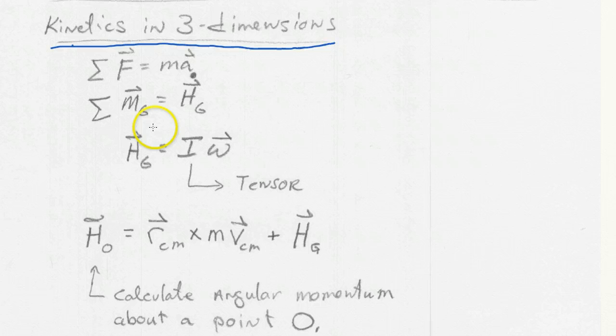And we can define this angular momentum also this way, where the angular momentum is equal to I omega. Omega is the angular velocity. And in this case, we found that I has to be a tensor. It's no longer a scalar. So I is a tensor.